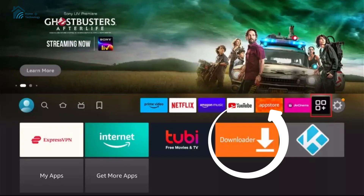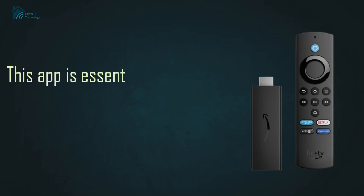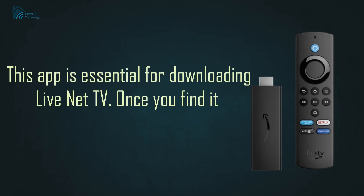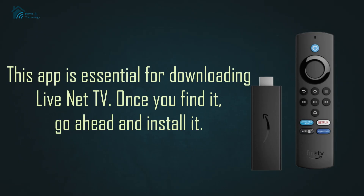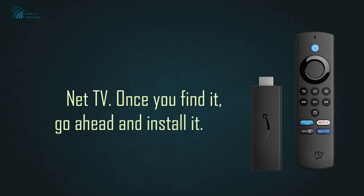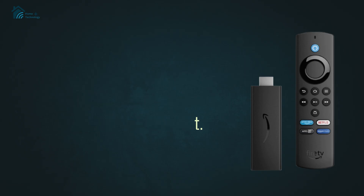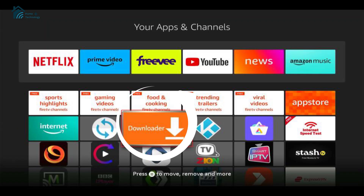Next, return to the home screen and search for the Downloader app. This app is essential for downloading LiveNet TV. Once you find it, go ahead and install it. After installation, open Downloader and grant it any necessary permissions.